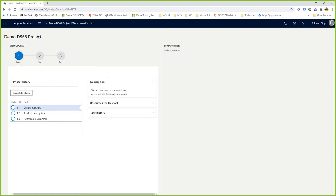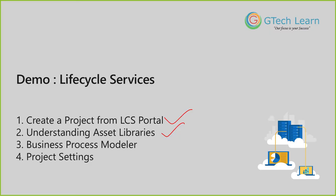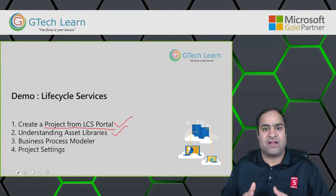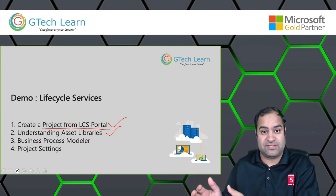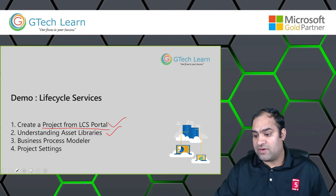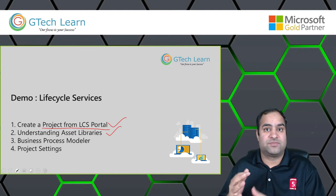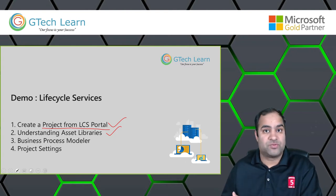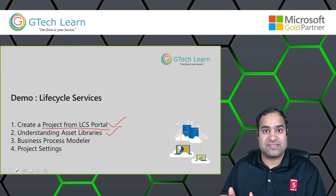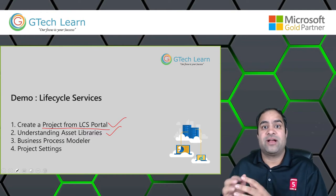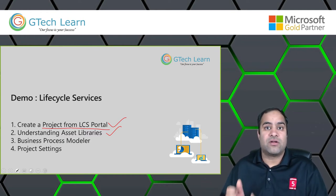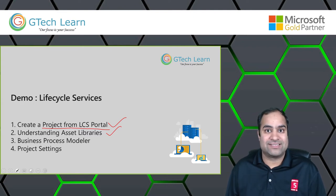We'll be covering them one by one. Going back to the presentation — the first thing was how to create a project from the LCS portal, provided you have access. That was a quick demonstration on how to create a new project in LCS. Second, we have the concept of asset libraries and how they work in the Lifecycle Services portal. There are two categories: a project-specific asset library, and a shared assets library.